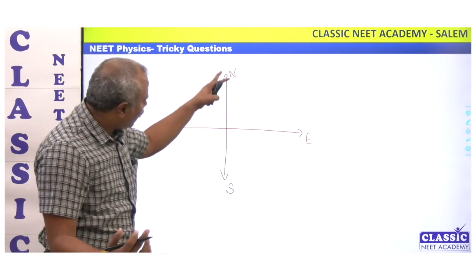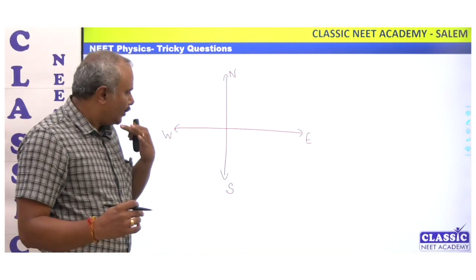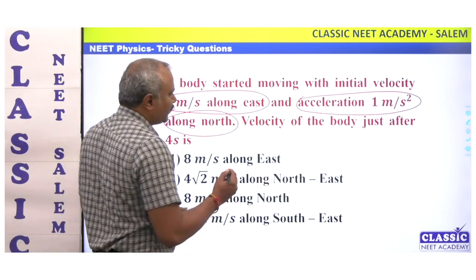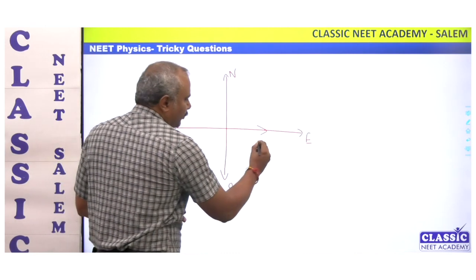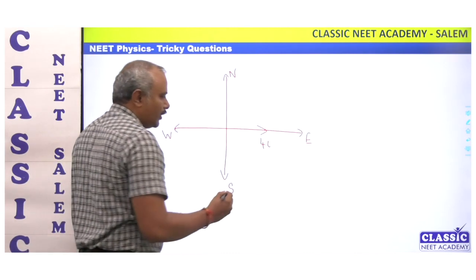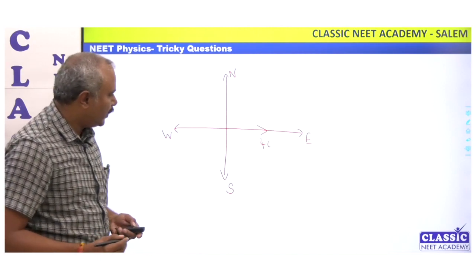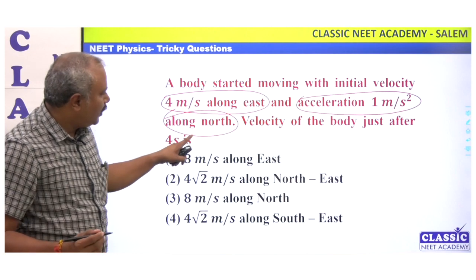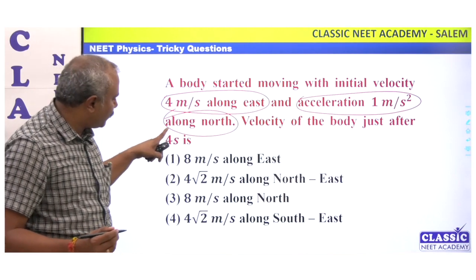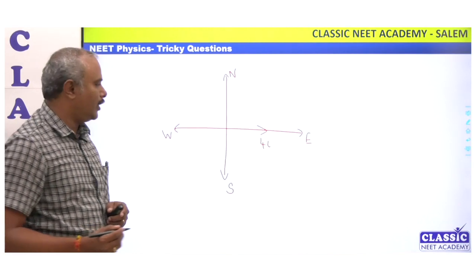Now if you take the plane, you can take the y-axis as north. Initial velocity is 4 meters per second along east, so this is 4i. The acceleration is 1 meter per second squared along north.